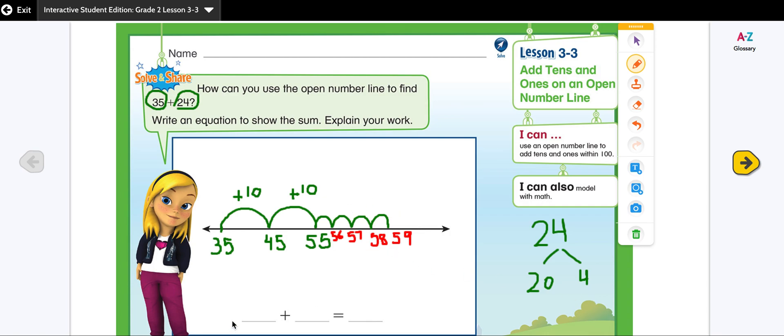And now there is my equation. 35 plus 24 that gives me 59.